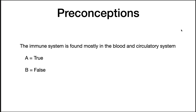Let's begin with some preconceptions. The immune system is found mostly in the blood and circulatory system — true or false? The answer is false. 70% of the immune system is in our digestive tract, and many other parts are in the lymph system. While the circulatory system is involved in the immune system, there are other parts of it that are larger.